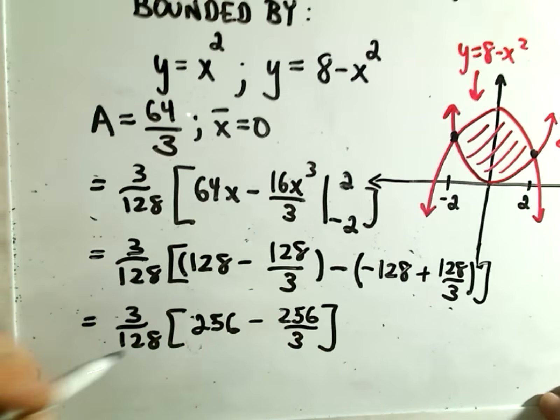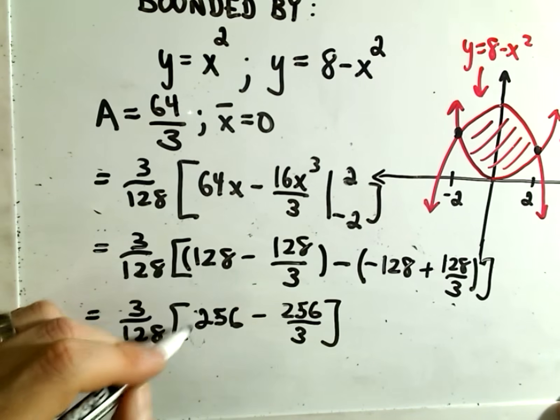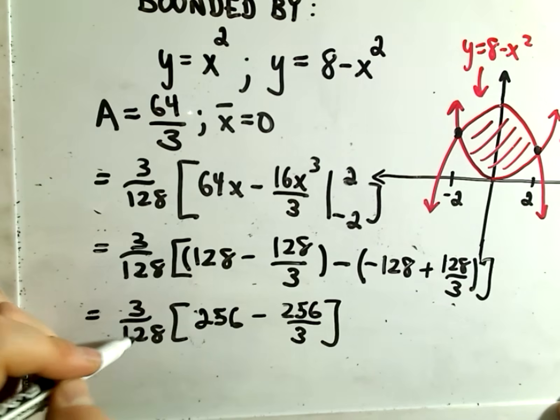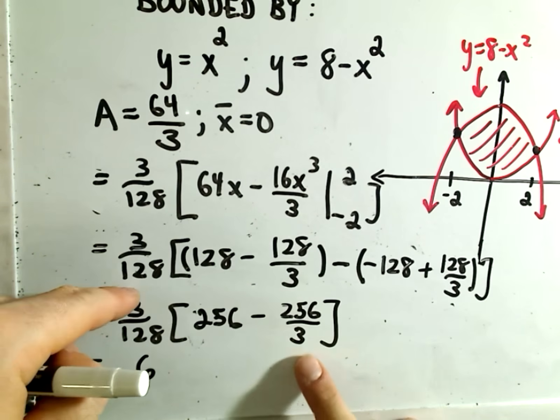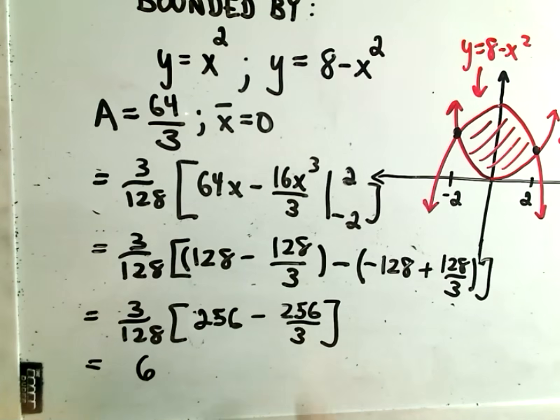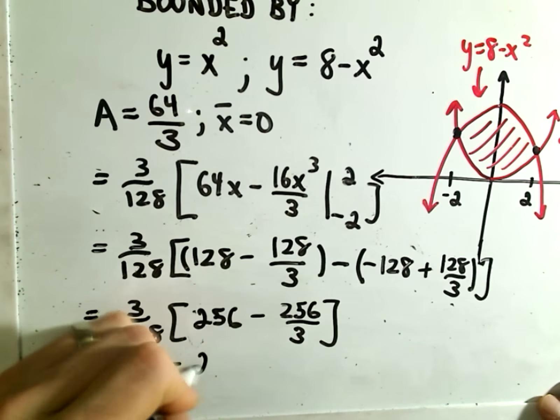When we distribute this out, 256/128 is 2, so we'll get 3 times 2 which is 6. Then it looks like the 3s would cancel out when we distribute, and we would have 256/128 which is -2.